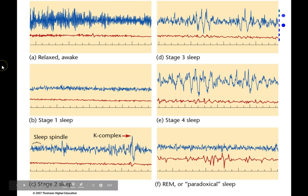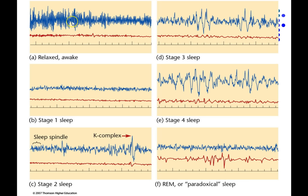Last time we left off talking about sleep and sleep stages. This is showing you typical EEG and eye movement patterns for these different sleep stages. As you're relaxed but awake before you get to sleep, you have larger, faster EEG — this is supposed to represent alpha activity at about 10 hertz. This is a really common frequency of brain activity; it's the dominant frequency you see in EEG when someone is awake.